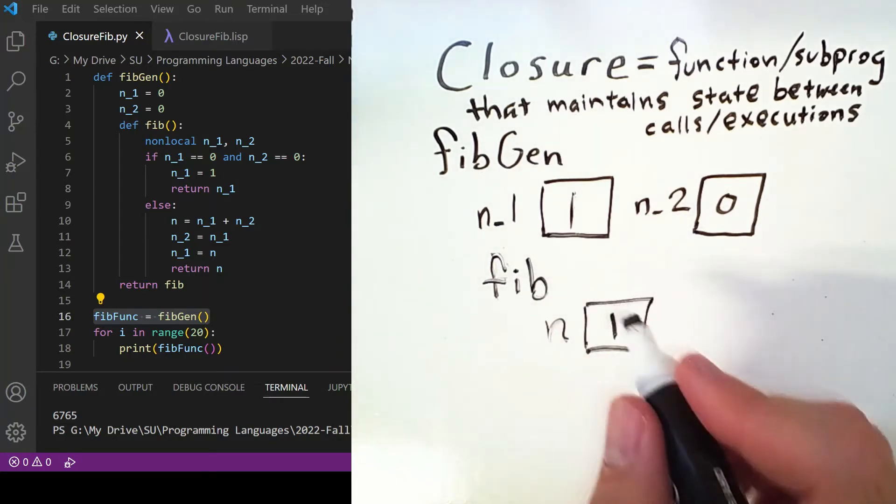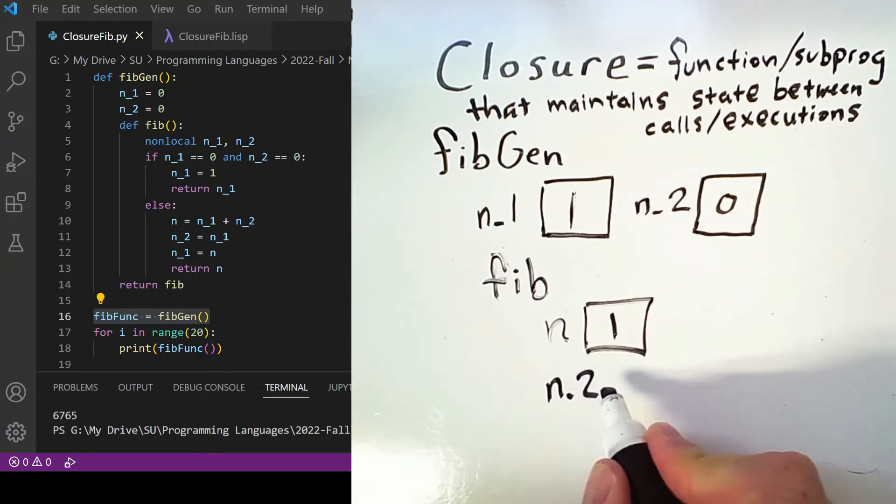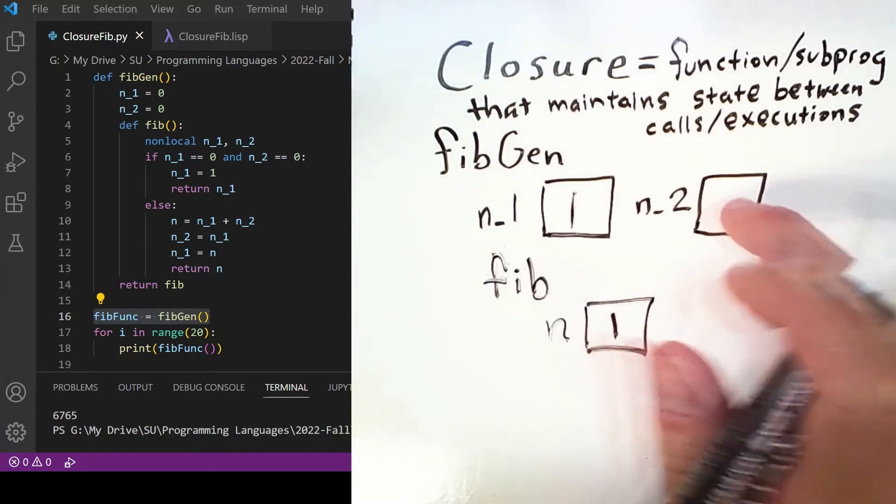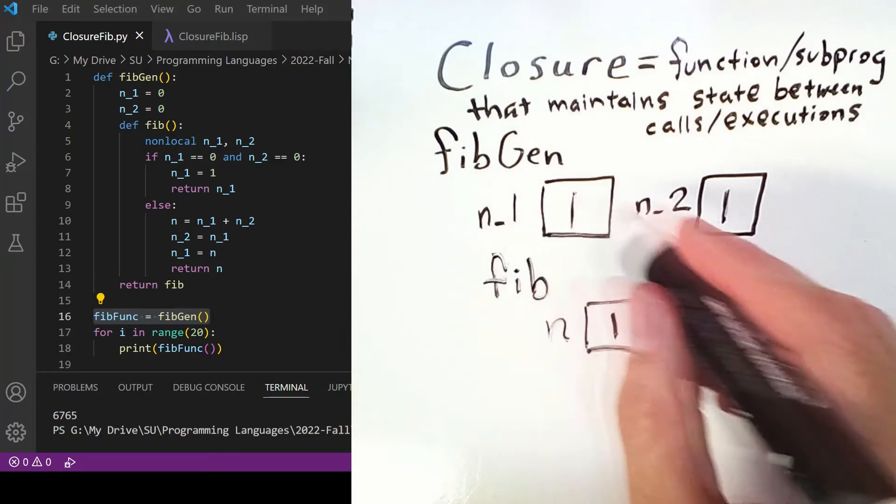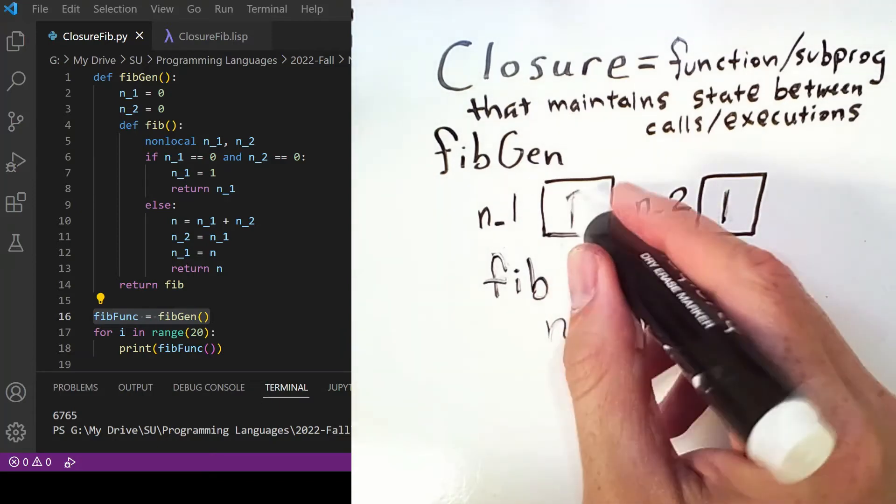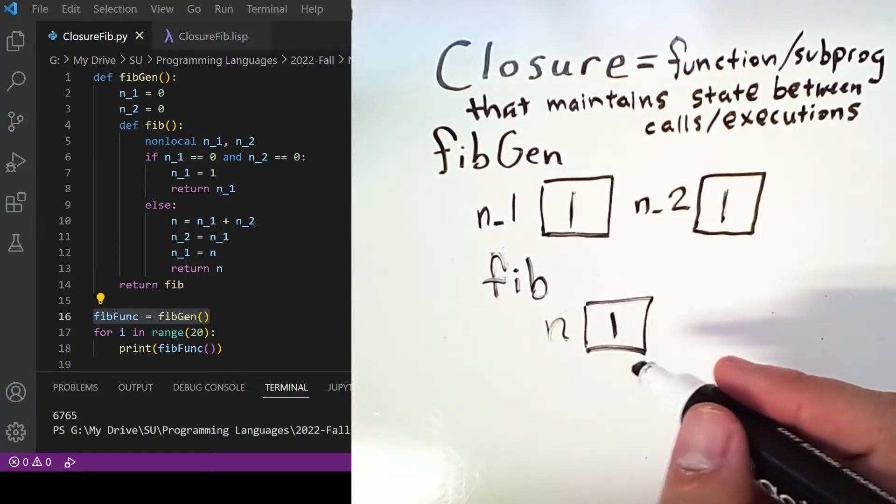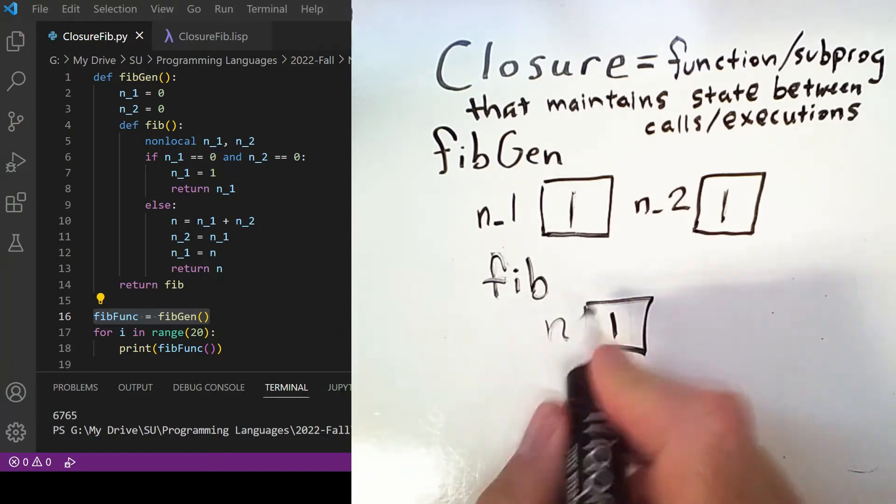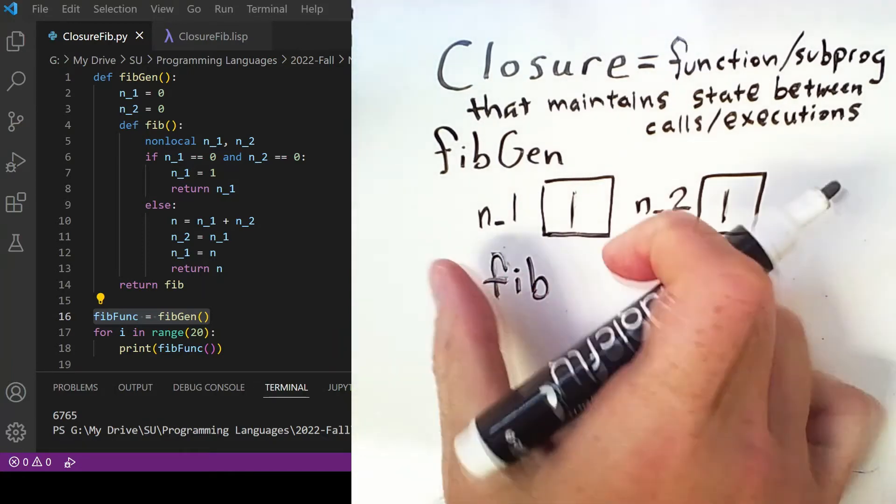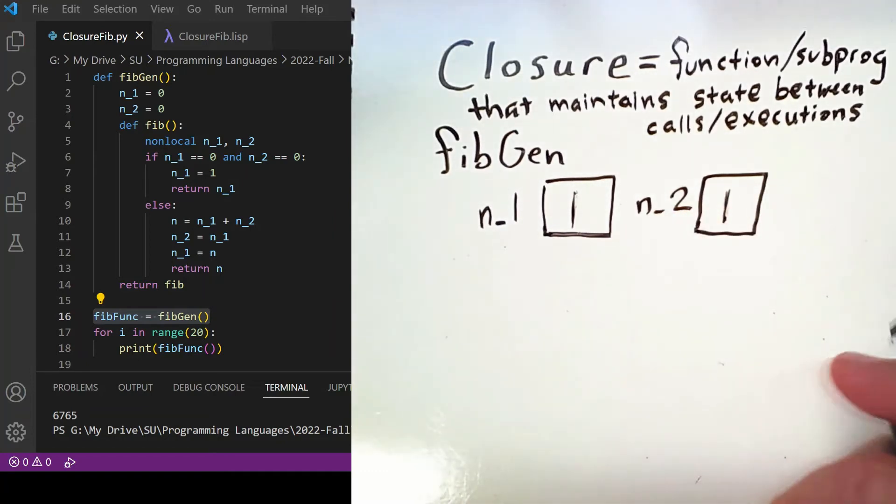But then we also update these values: n2 is set equal to what n1 is, which actually means we change this non-local version, and then n1 equals n, which doesn't change it in this case. And at the end we return n. And because this function is returning, we eliminate that local variable and we've gotten to the next value in the sequence.